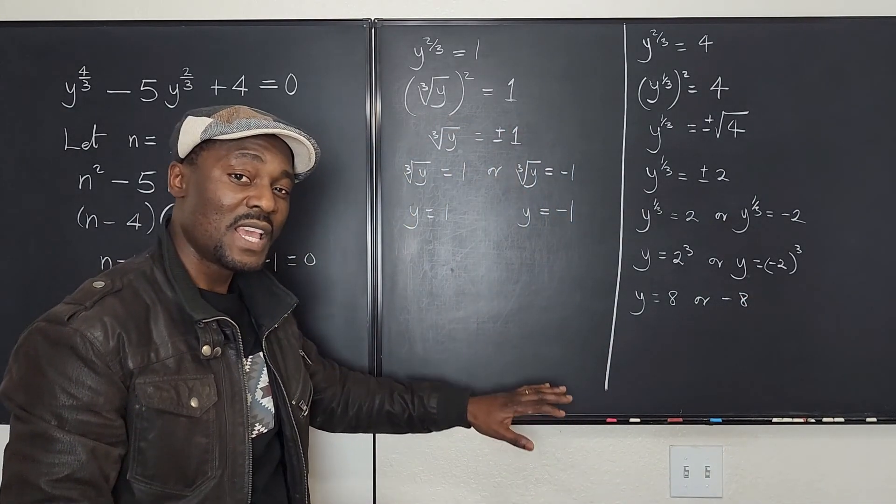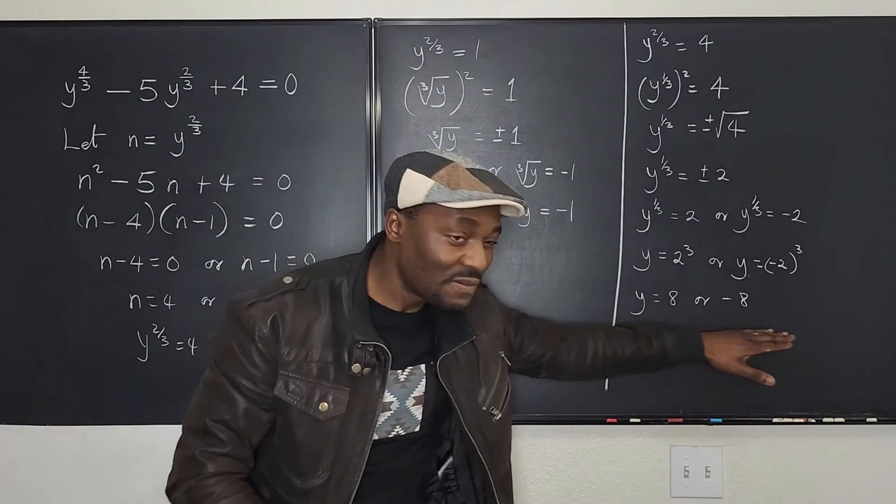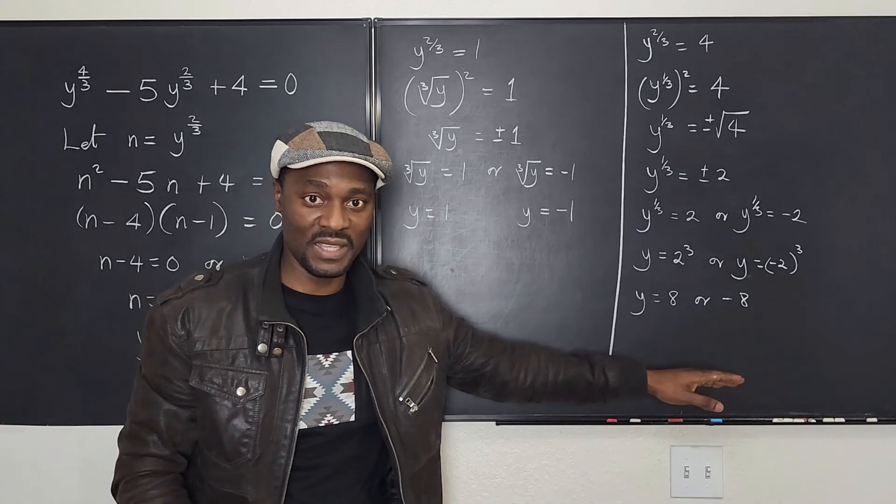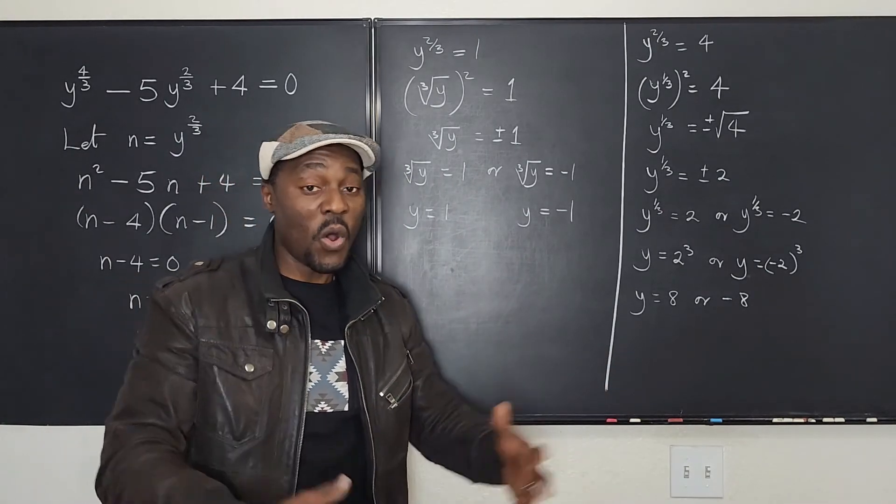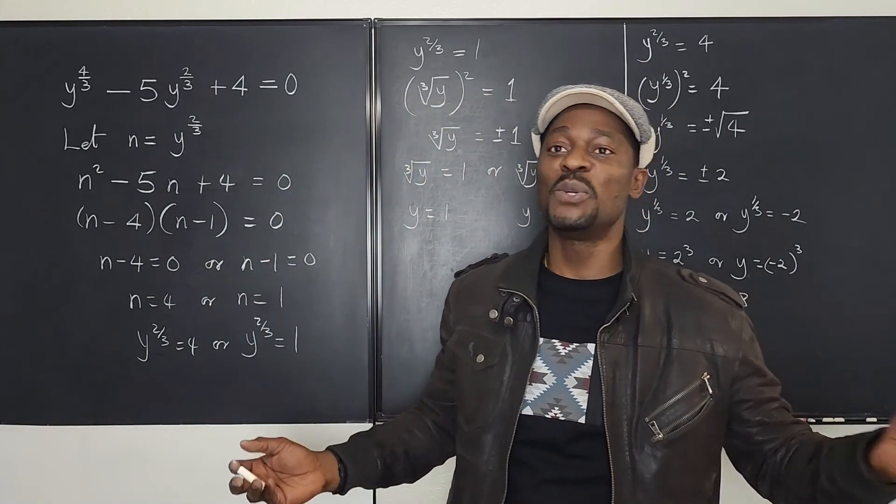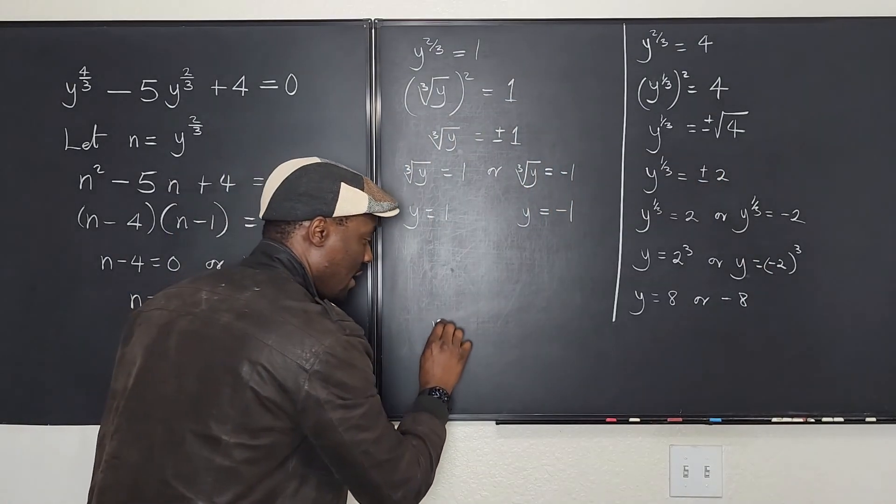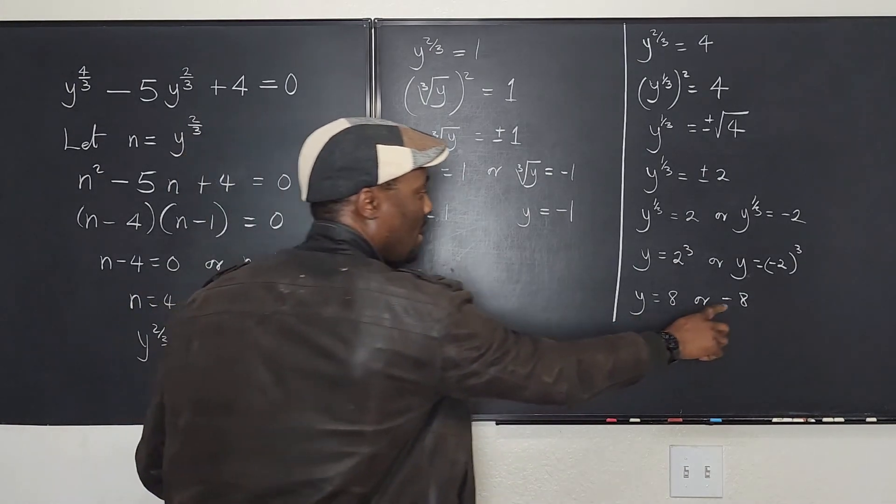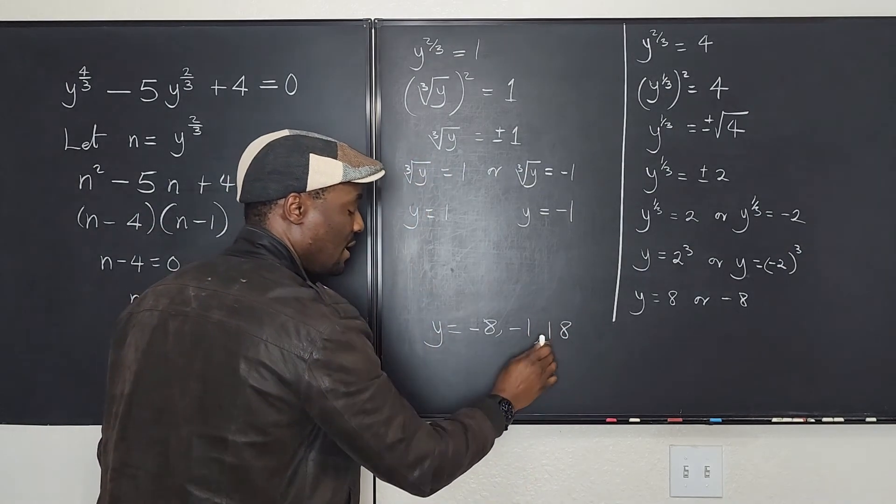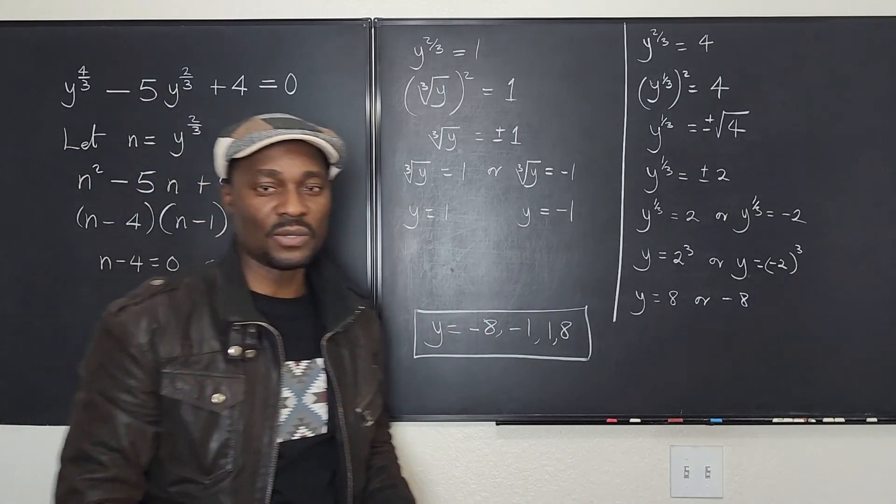So as you can see, because the highest exponent in this equation was four, we have to get four answers. Sometimes they're not all real, but fortunately we had real solutions in this case. Sometimes you don't get real solutions for all four of them. We have to get four solutions, unless the question specifically says you should only choose the real ones. And even so, you still have to get four solutions. Say that y will be equal to, let's start from the smallest number, will be negative eight, negative one, one, and eight. These are the four possible values of y that will make this equation true.